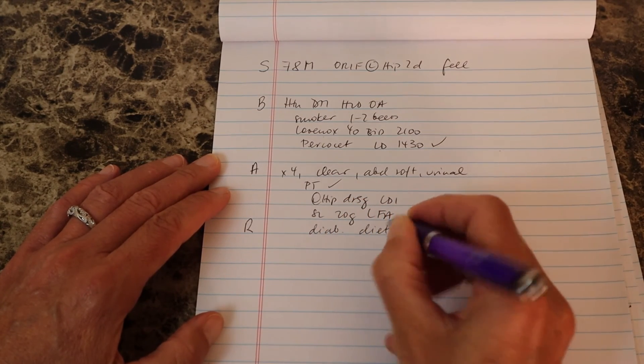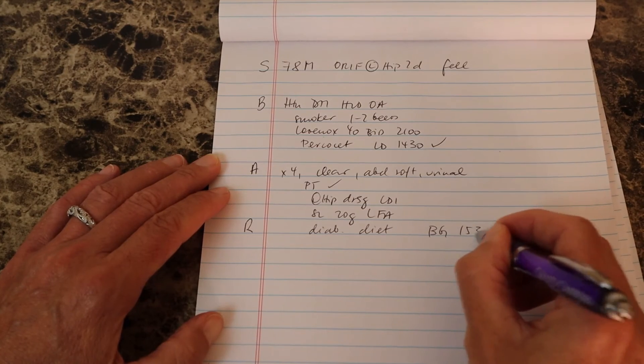Blood sugars for me were 106, 189 and 153 so I didn't give him any dinner coverage.